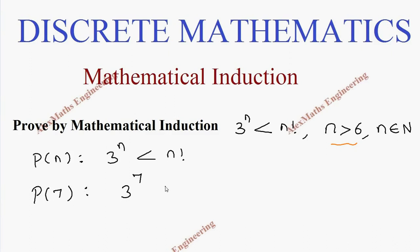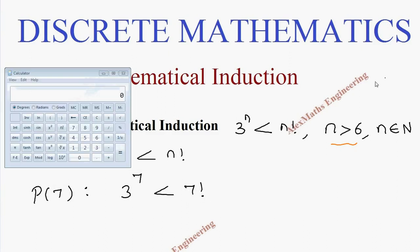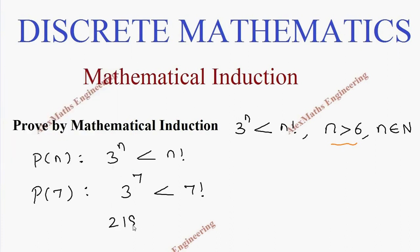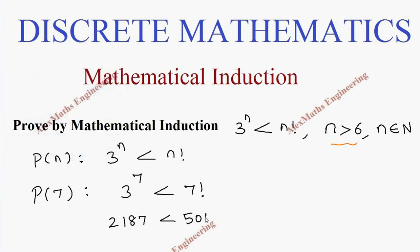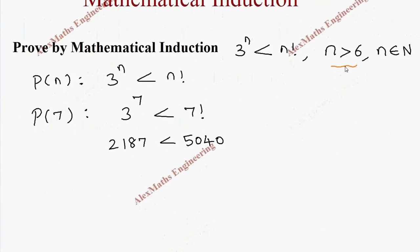So 3 power 7 is less than 7 factorial. Let's find what 3 power 7 is: 3 power 7 is 2187, which is less than 7 factorial. 7 factorial is 7 into 6 into 5 into 4 into 3 into 2 into 1, which equals 5040. This is true, so from this we can say P of 7 is true.